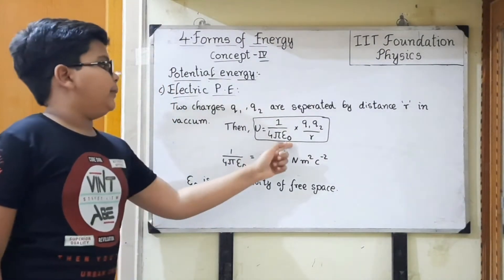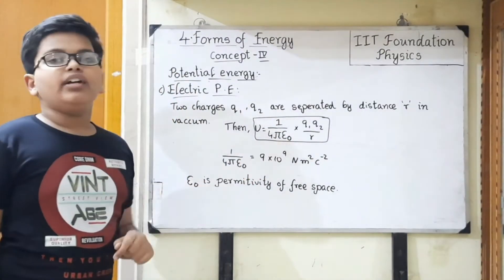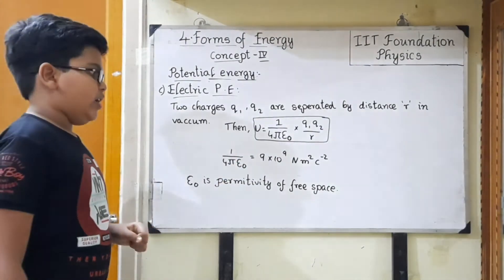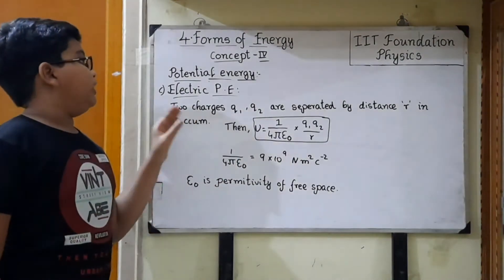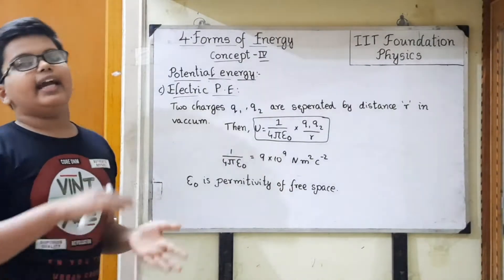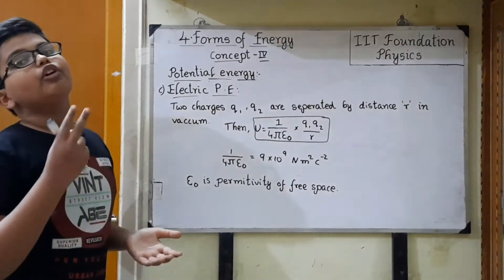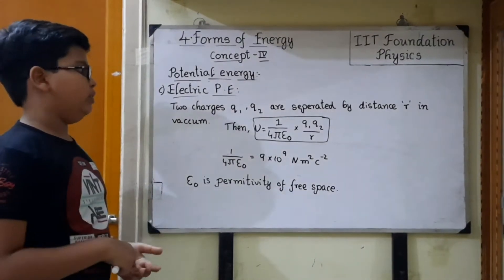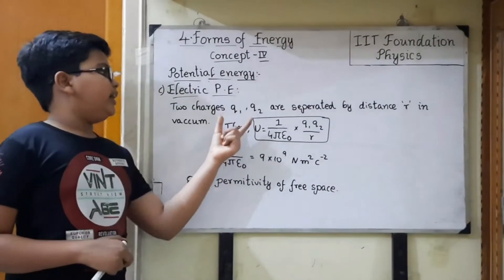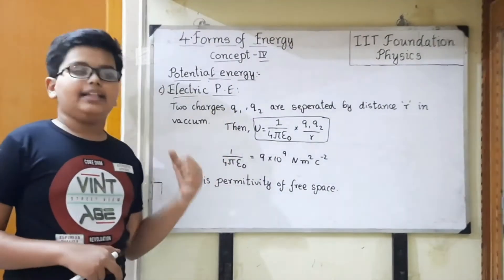Where epsilon 0 is nothing but the permittivity of free space. This electric potential energy can either be positive or negative — it depends upon the charge.